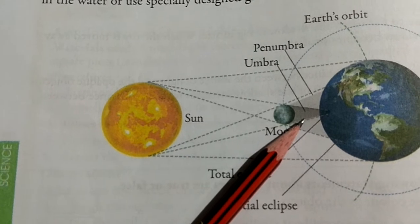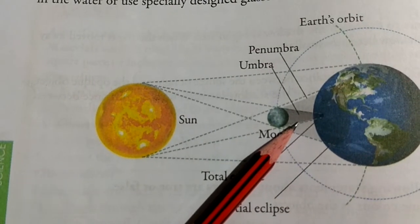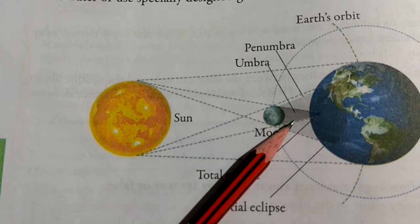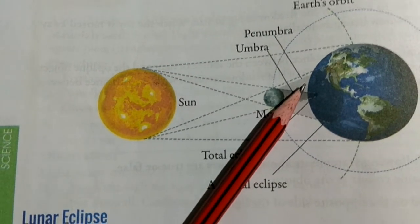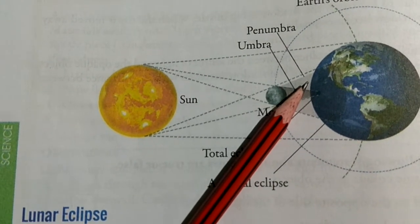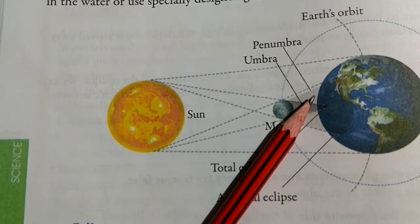As you can see, the center of the shadow is the darkest region, it is called umbra. The region of the partial darkness at the edges of the shadow is called penumbra.